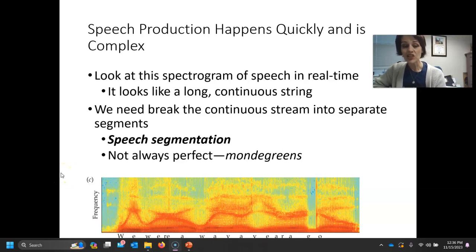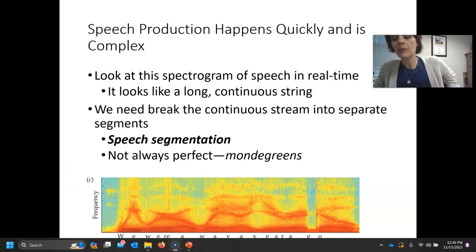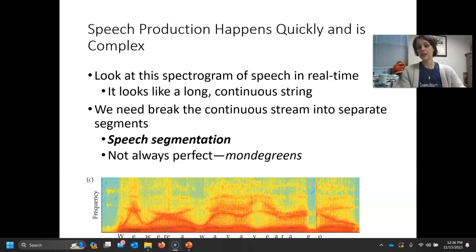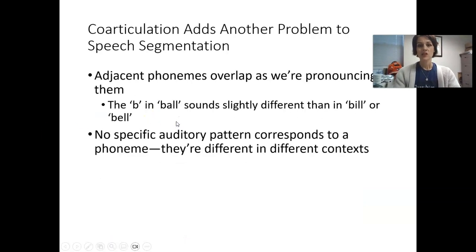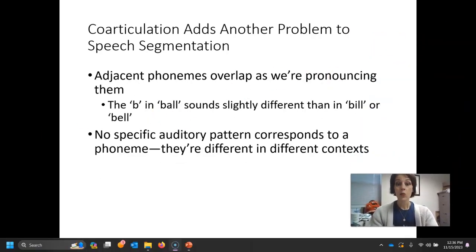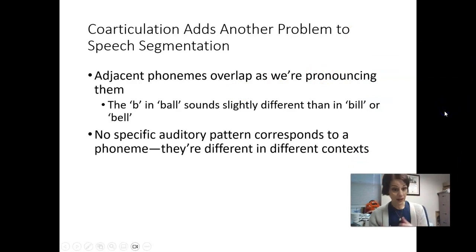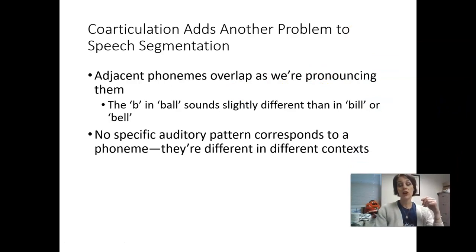Sometimes our speech segmentation is not perfect, and we sometimes end up with the phenomenon of mondegreens. Another big problem with speech segmentation is a phenomenon known as coarticulation.